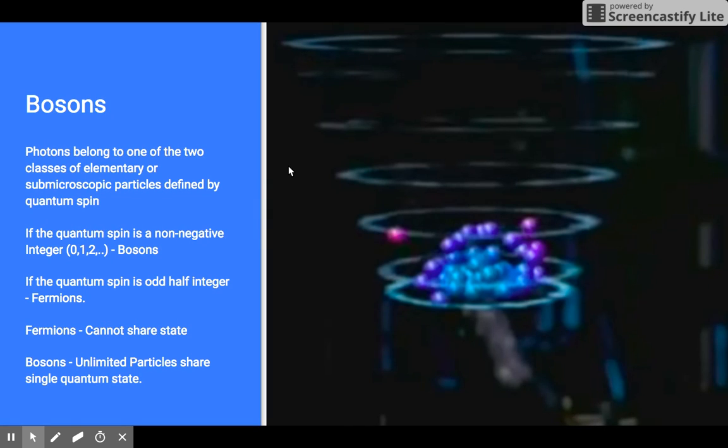According to Bose's observations, photons belong to one of two classes of elementary or sub-microscopic particles, defined by whether their quantum spin is a non-negative integer (0, 1, 2, etc.) or an odd half-integer (1/2, 3/2, etc.). The former type, called bosons, include photons with spin 1.